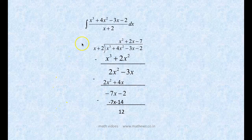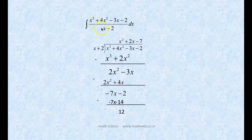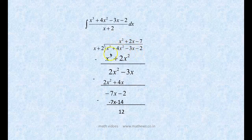We start with the problem: integral of (x³ + 4x² - 3x - 2) / (x + 2) dx. The degree of the numerator is 3 and the degree of the denominator is 1. So when the degree of the numerator is greater than the degree of the denominator, we divide the numerator by the denominator.